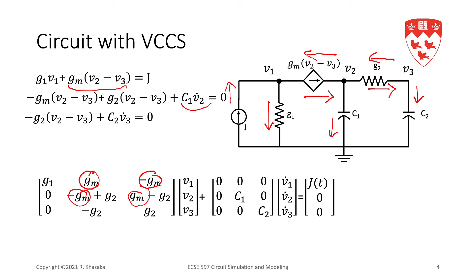So, one of the things that we notice here is that by having this controlled source, we lose the symmetry. So, the equations are no longer symmetric. The matrices are no longer symmetric. Up to now, with all the stamps we have seen so far, the MNA equations or their matrices have been symmetric, but that is no longer the case once we have controlled sources.